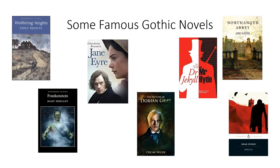Some famous Gothic novels of the past. We've got obviously Frankenstein by Mary Shelley, written by a 19-year-old Mary Shelley. It stemmed from a competition she had with a bunch of other people about who could write the scariest ghost story, and she came up with a corker with Frankenstein. Wuthering Heights and the Bronte sisters are fairly key novels, and Jane Eyre as well.